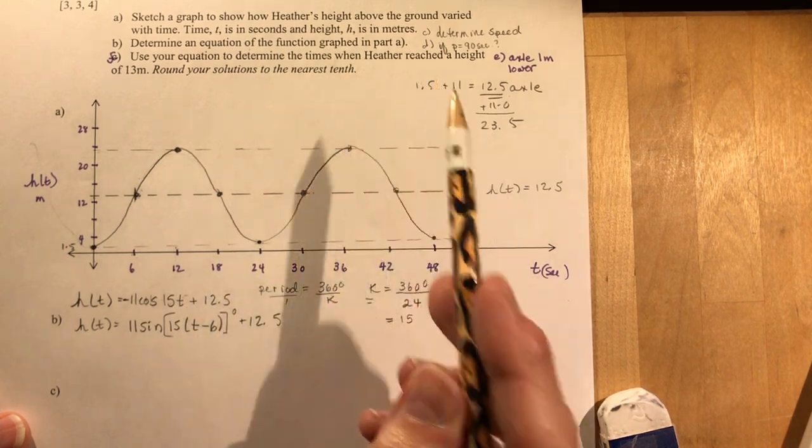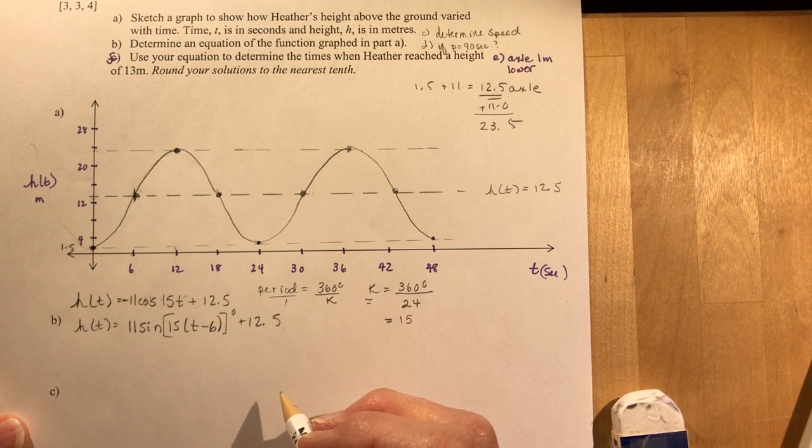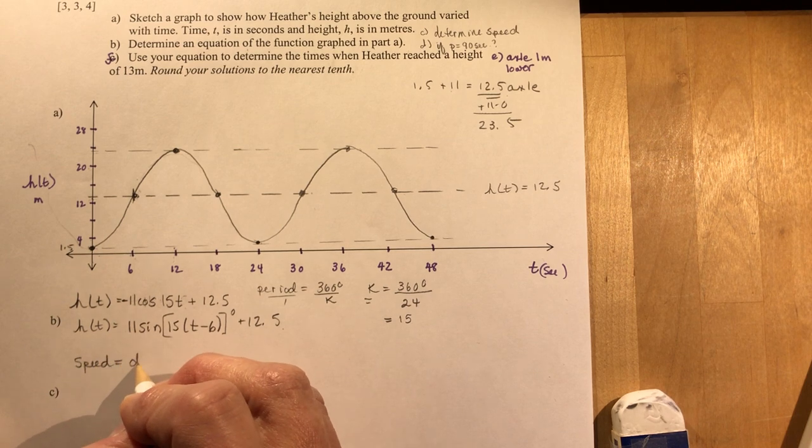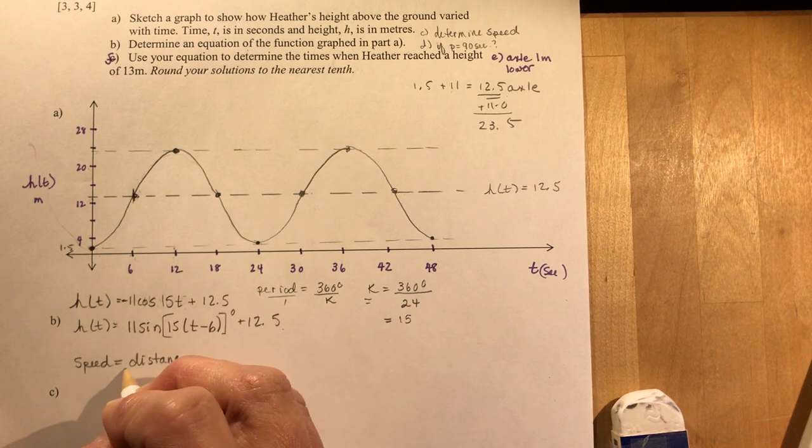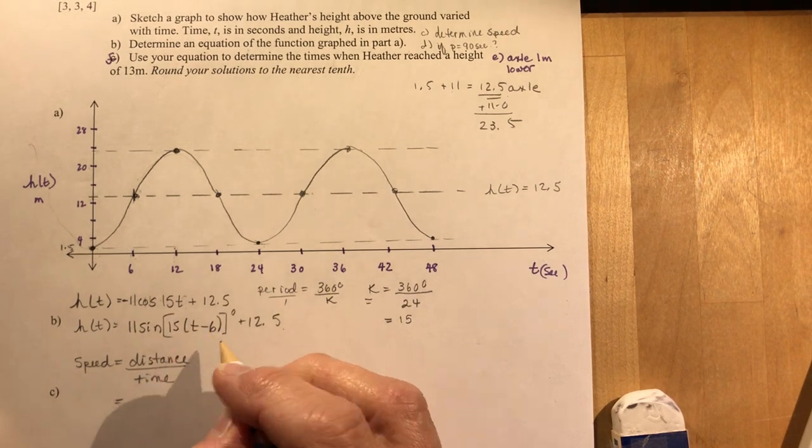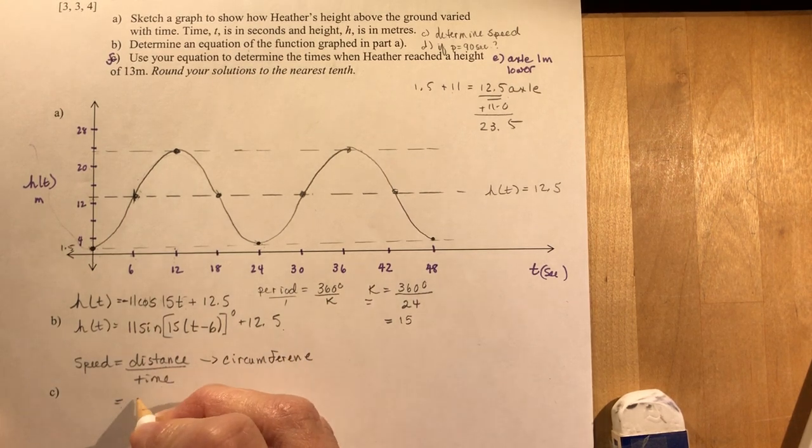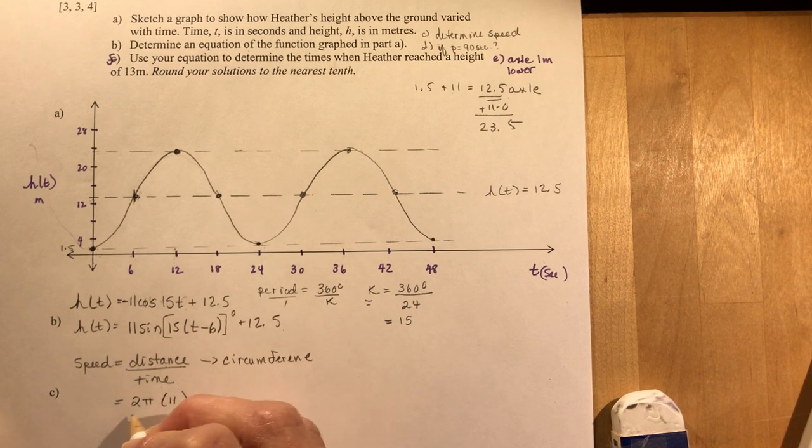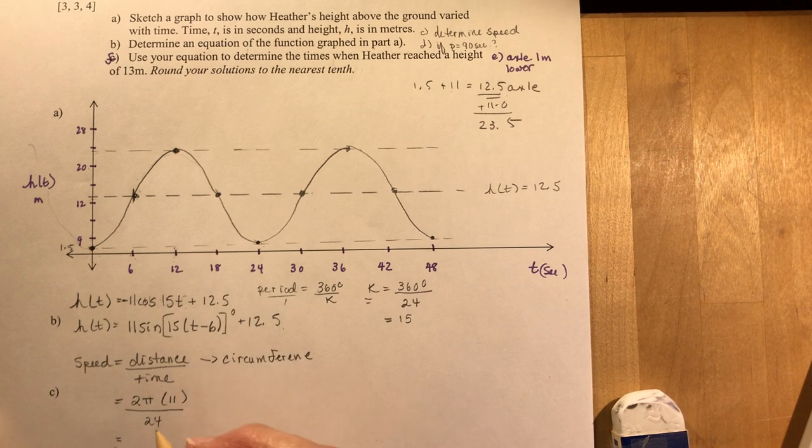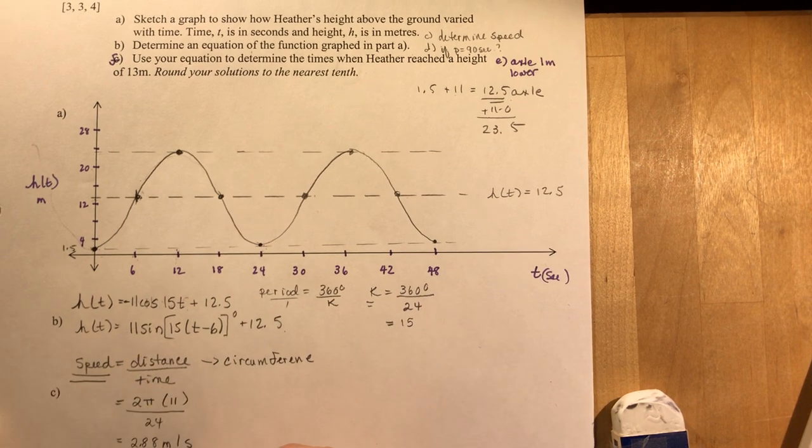So I have an equation for the function. C on your handout, doesn't say that on mine, but I asked you to determine the speed because I know you're going to need to know how to do that. So speed, remember speed is distance divided by time. So no reason why you can't catch this one, because it's not that hard. Time is just the period. That's 24 seconds. The distance traveled is the circumference. And you know what circumference is? 2 pi r. So 2 pi radius is 11 over the time for one complete cycle, 24. And that gives me 2.88 meters per second.